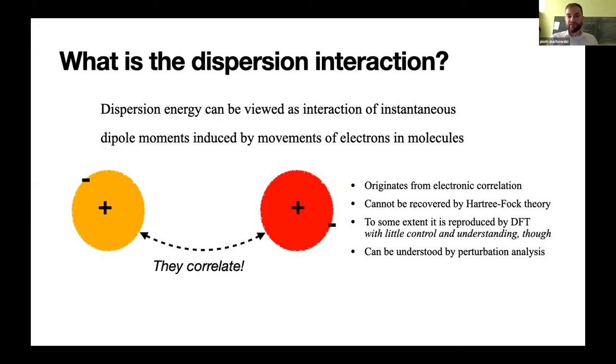placed favorably in space. So essentially, the dispersion energy is something which has to do with correlation of electrons' movement.